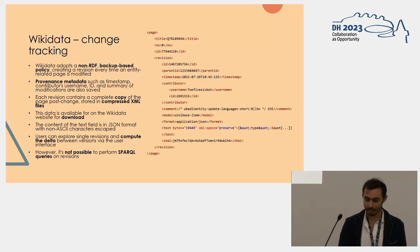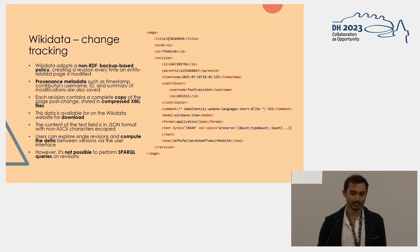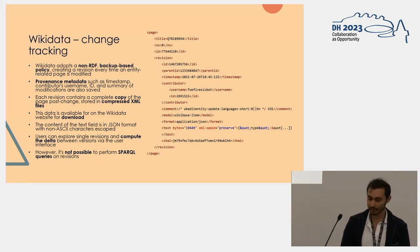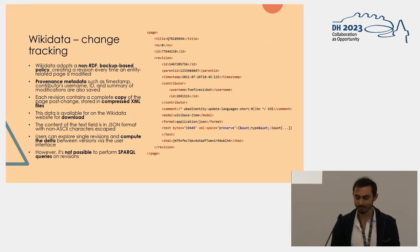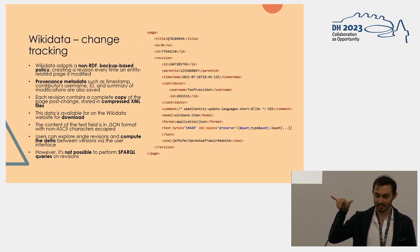Doing SPARQL queries on changes can be quite interesting because you can do time-agnostic queries — queries agnostic about time — where you assume the information you want might not be the latest one but was true in the past. You can get the entire history of that information, knowing who did what, when, and what the primary sources were. But how does Wikidata manage that problem? Well, every time you make a modification on Wikidata, the entire page is saved in XML, with metadata about the modification inside the XML, but the page content is saved as a JSON string inside that XML — so quite difficult to query.